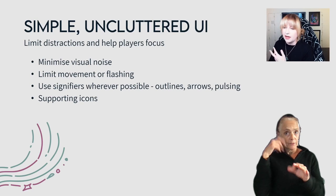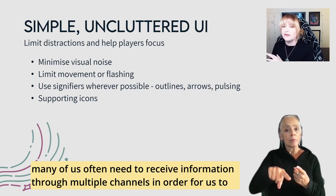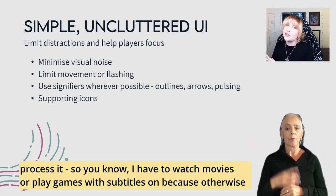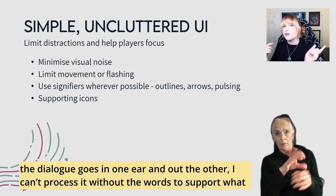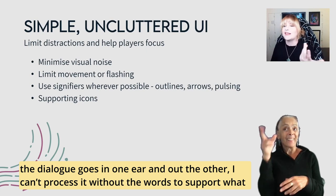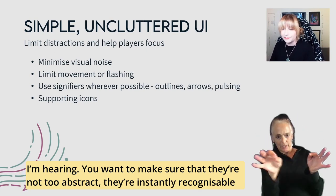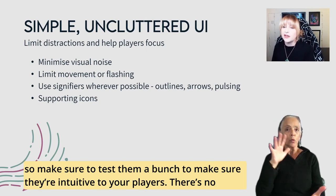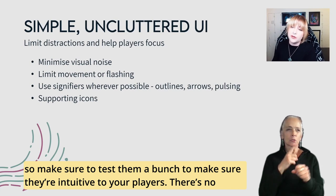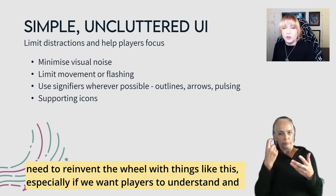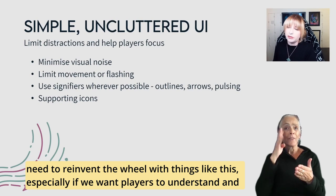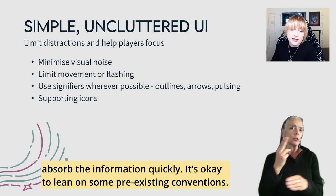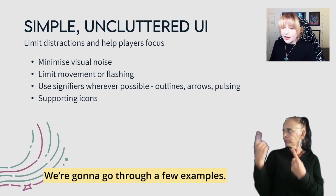Having two channels of information is especially crucial for cognitive accessibility — many of us need to receive information through multiple channels to process it. For example, I have to watch movies or play games with subtitles because otherwise dialogue goes in one ear and out the other. Make sure icons are not too abstract — they should be instantly recognizable. Test them thoroughly to ensure they're intuitive. There's no need to reinvent the wheel; it's okay to lean on pre-existing conventions, especially if we want players to absorb information quickly.